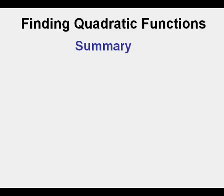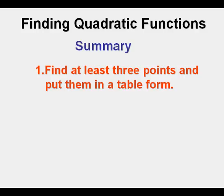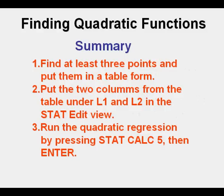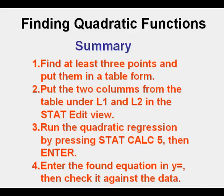Now we're going to summarize this video. The first step is you need to find at least 3 points and put them in a table form, if they're not in table form already. The second thing you need to do is put the two columns from the table under L1 and L2 in the stat edit view. The third thing we need to do is run the quadratic regression by pressing stat calc 5, then enter. And the last thing we need to do is enter the found equation in y equals, then check it against the data. First visually, then we can use the trace, we can use the table mode, we can do many things to make sure that we are right.